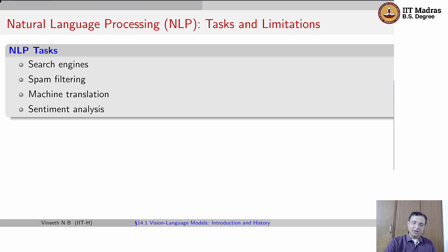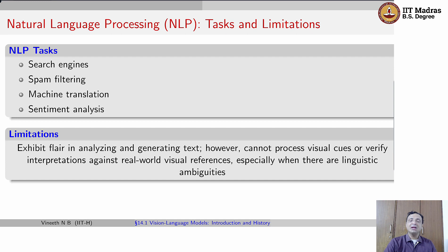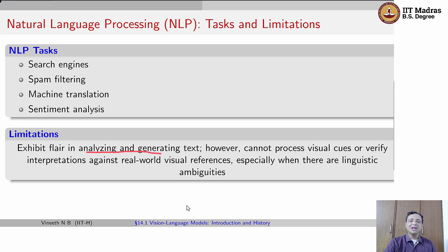From the perspective of natural language processing, the standard tasks that NLP attempts include search engines, spam filtering, machine translation, sentiment analysis, and many more. They have an inherent limitation too: while they are pretty good at analyzing and generating text, they cannot process visual cues or verify interpretations against real-world visual references, especially when there are linguistic ambiguities.